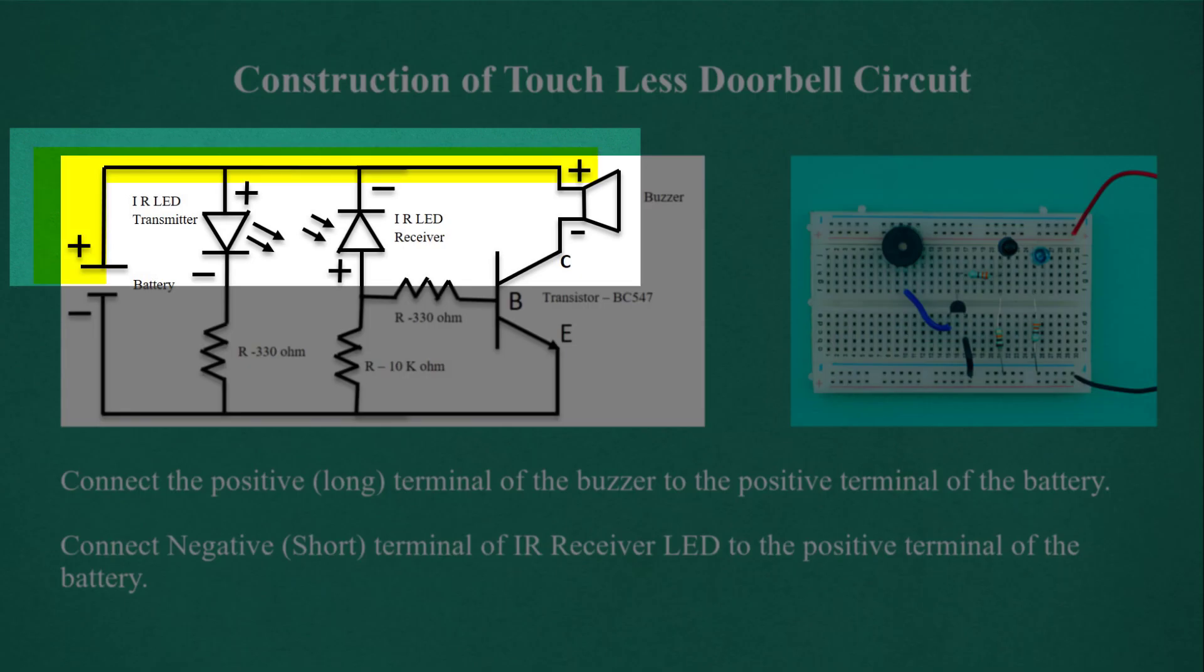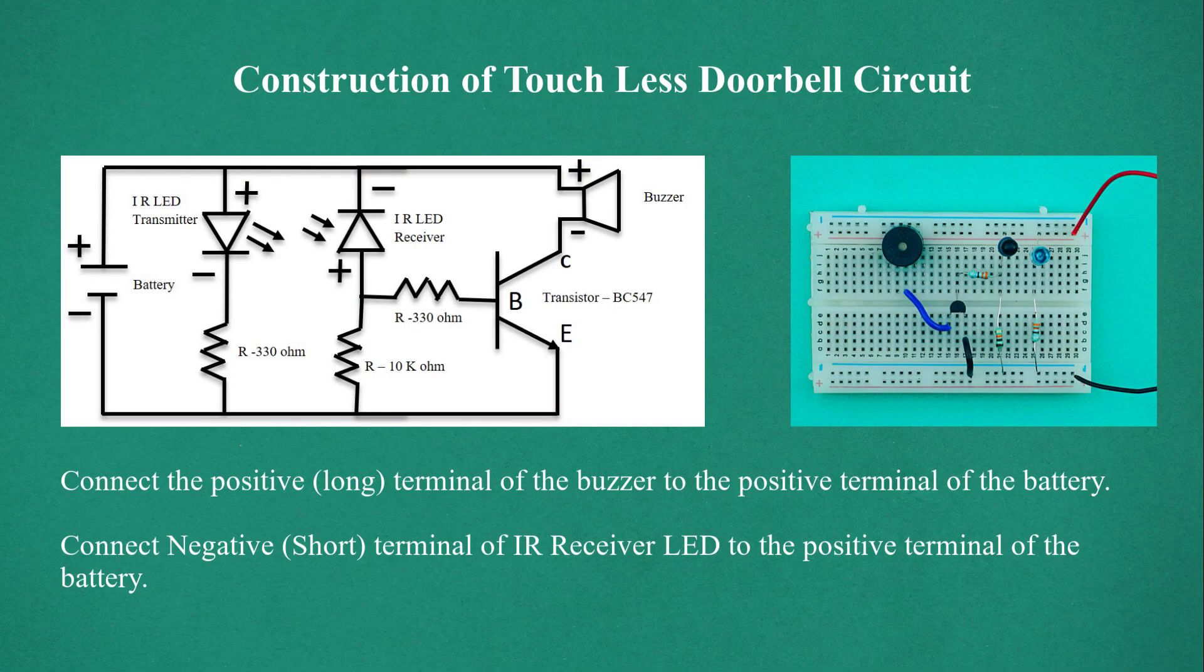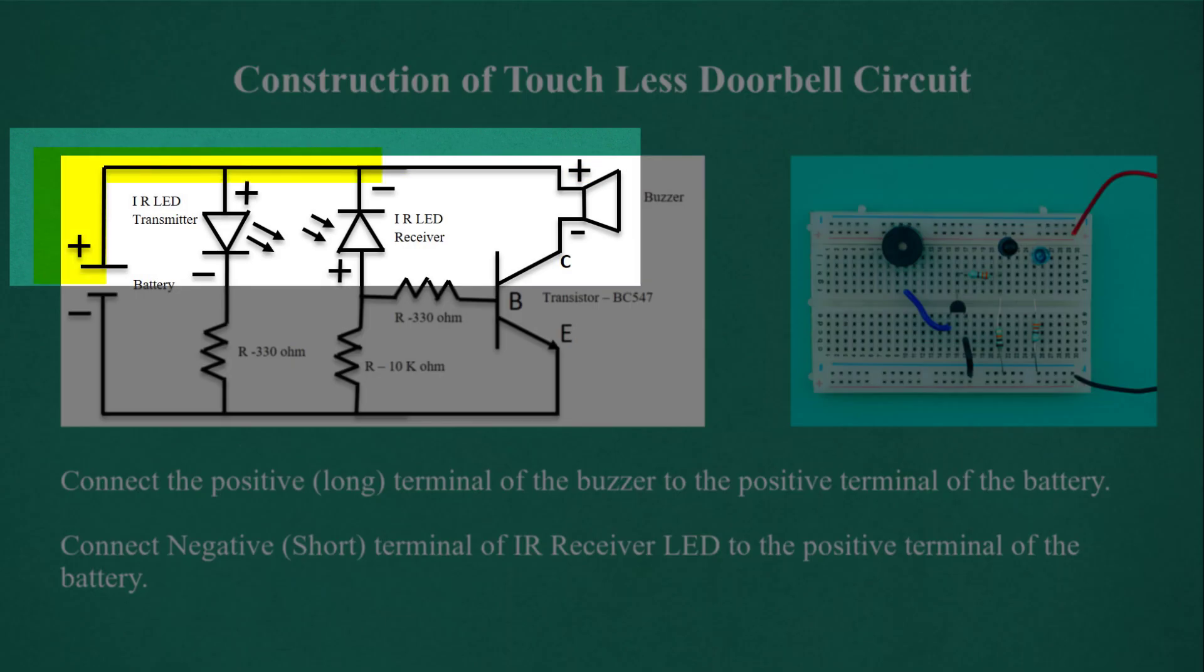Connect the positive long terminal of the buzzer to the positive terminal of the battery. Connect negative short terminal of IR receiver LED to the positive terminal of the battery.